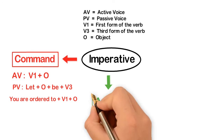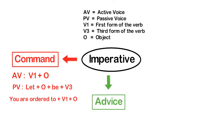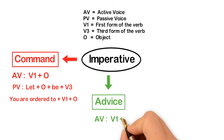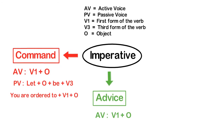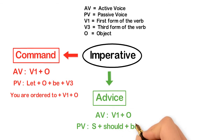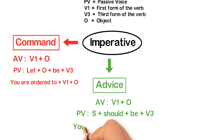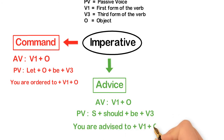For imperative sentences expressing advice, the structure of active voice is: first form of the verb + object. Converting it to passive voice, the structure becomes: subject + 'should be' + third form of the verb. This structure can also be used: 'You are advised to' + base form of the verb + object.